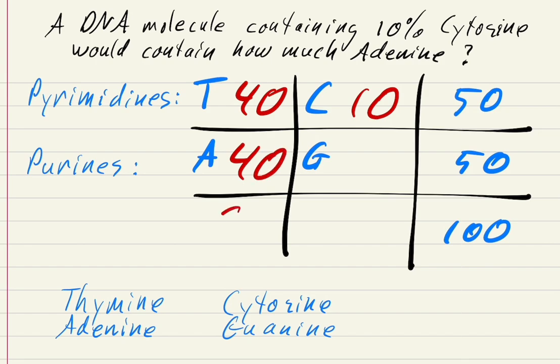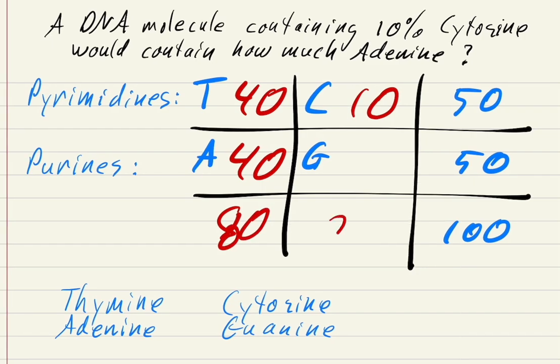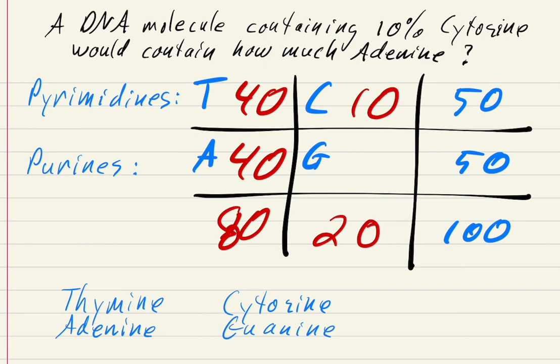40 plus 40 is 80. If the total is 100 and the first column is 80, the second column has to equal 20. There's only one box left — it has to be 10, because no other number would make all those numbers add up correctly top to bottom and left to right. In this case, we were asked for adenine, so 40% is the answer. You could have stopped when you got there, but I wanted you to see you can go all the way around and answer all the questions.